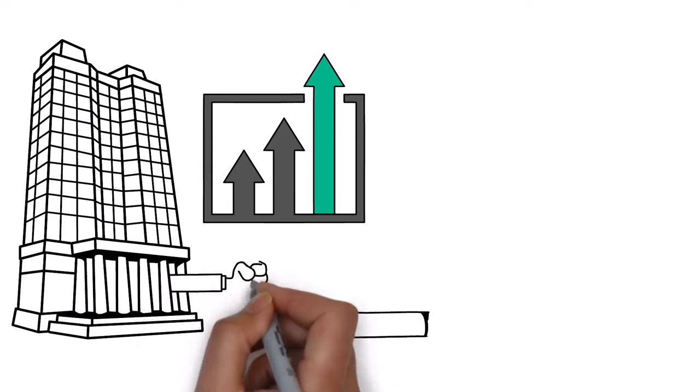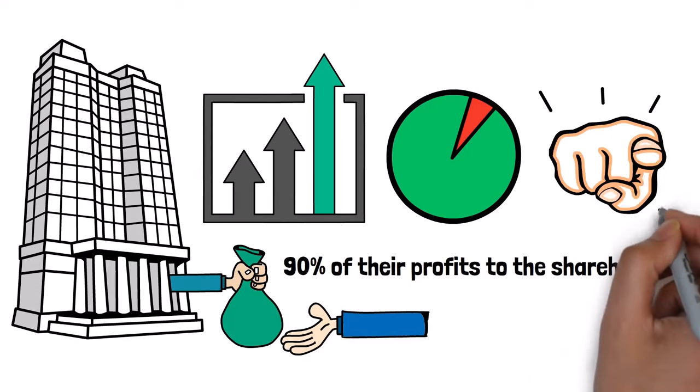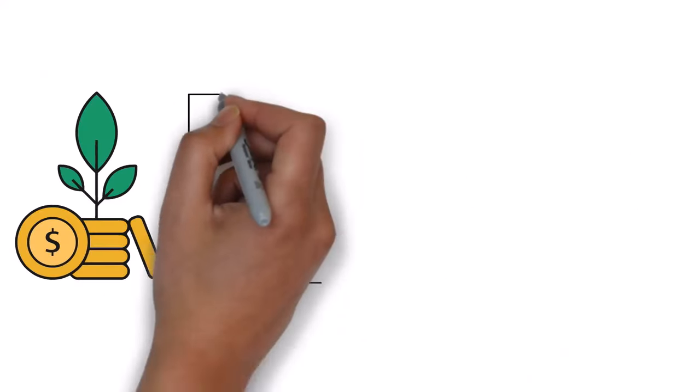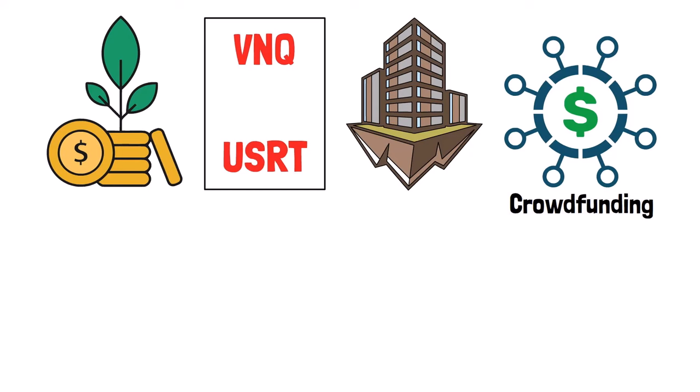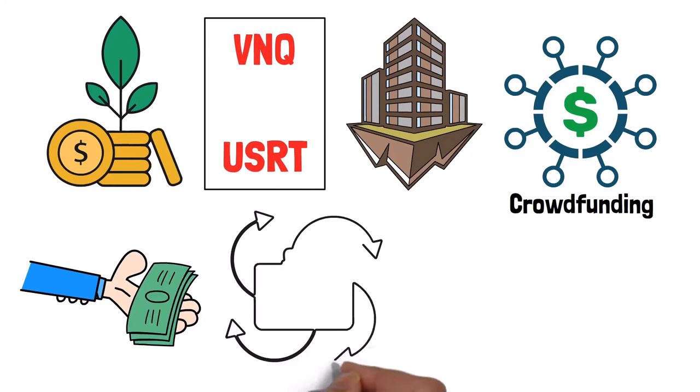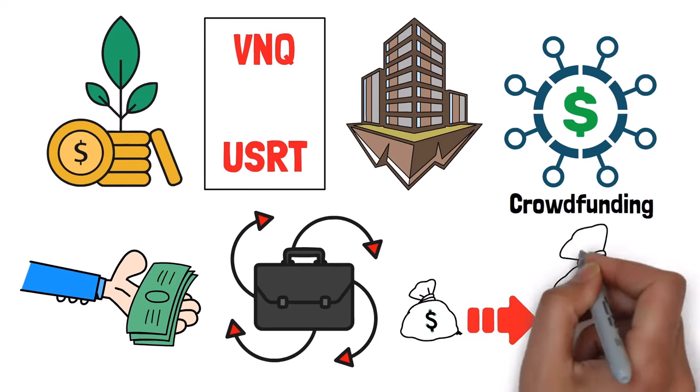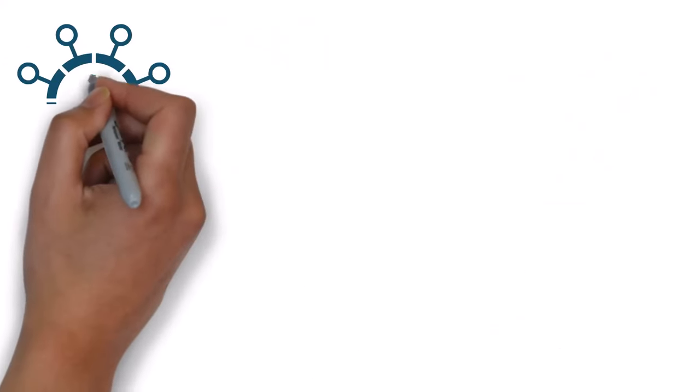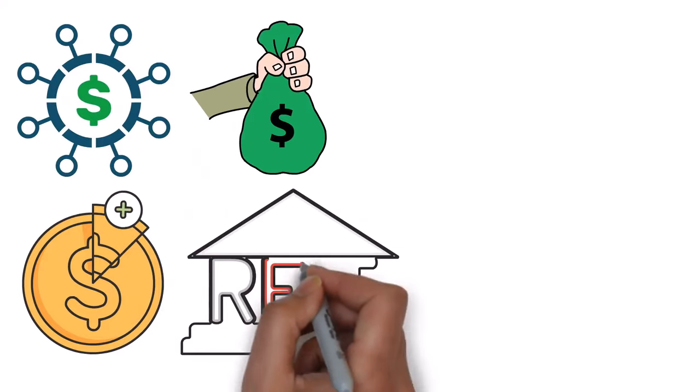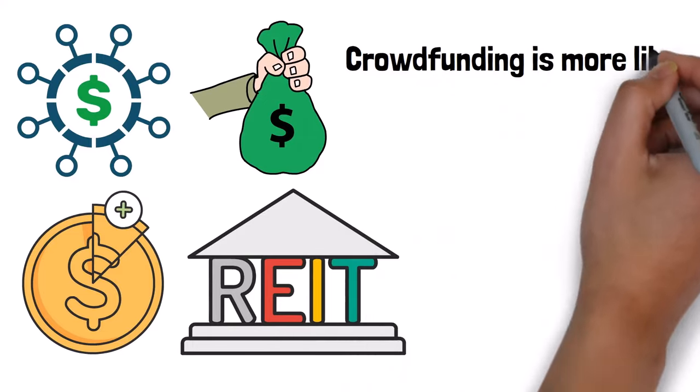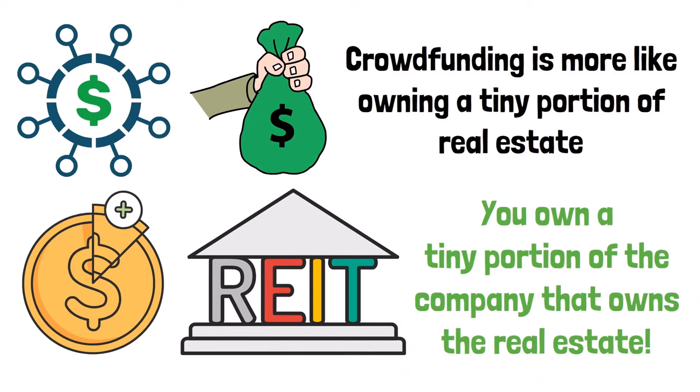One major advantage of REITs is that they give out huge dividends. Usually, they give 90% of their profits to the shareholders. To invest in REITs, check out options like VNQ and USRT. Another method you can use to invest in real estate is crowdfunding. Crowdfunding allows you to invest money, no matter how small, into a platform that owns a portfolio of real estate investments. As the investments bring returns, so too will you gain profits. Most of these crowdfunding platforms also pay off dividends to investors, but their dividends aren't as much as what you'll get from REITs. However, crowdfunding is more like owning a tiny portion of real estate, unlike an RIT investment, where you own a tiny portion of the company that owns the real estate.